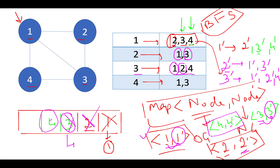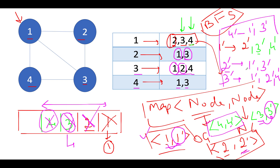Next, node 4 gets pulled out from the queue. We iterate over all connections of 4: 1 and 3. For neighbor 1: it's in the map — extract the corresponding node 1' and create a connection between 4' and 1'. For neighbor 3: it's in the map — extract 3' and establish a connection between 4' and 3'. With this, we have completed all iterations and we are done cloning the graph. We have cloned the entire adjacency list and recreated new nodes corresponding to the original graph.